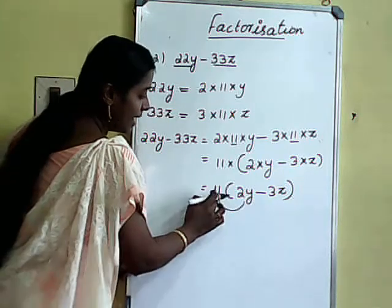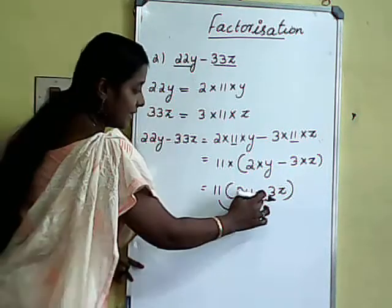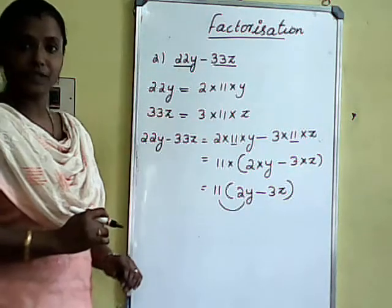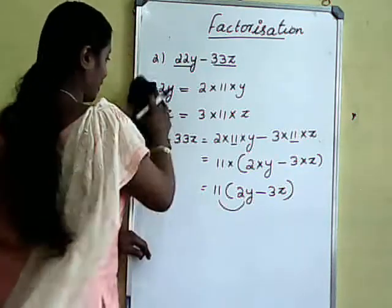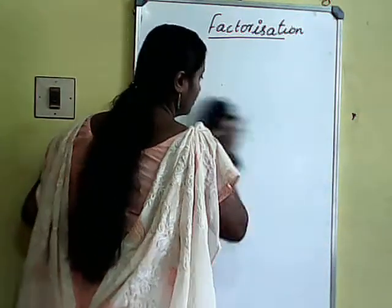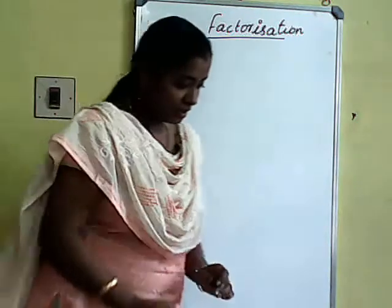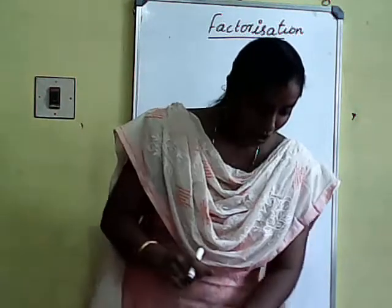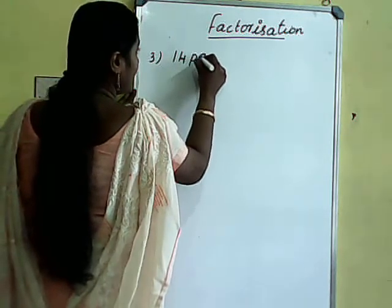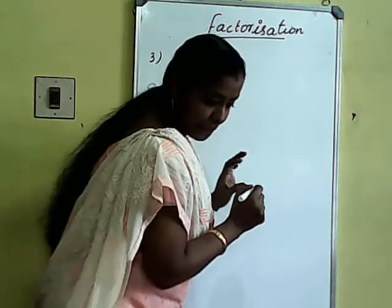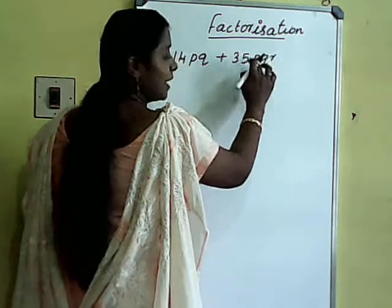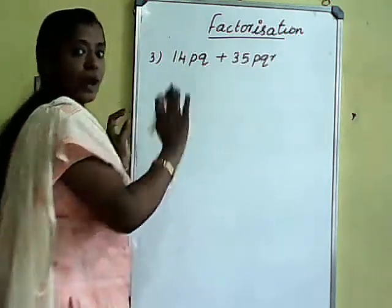Applying the distributive law: 11 into 2y is 22y, minus 11 into 3z is 33z — which gives back the original expression. One more problem: 14pq plus 35pqr.